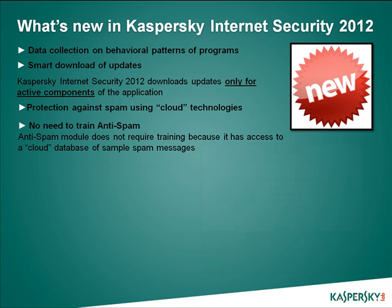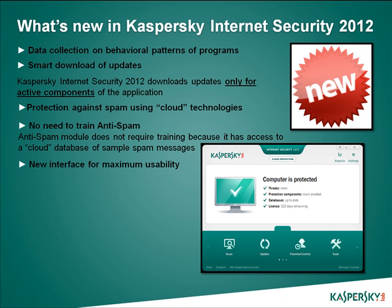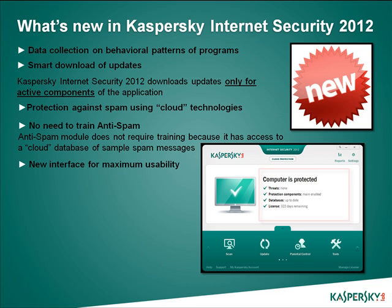New interface for maximum usability. In Kaspersky Internet Security 2012, significant changes have been made to the interface of the main window. The modern animated design facilitates the perception of information and makes it easy to run basic scenarios. The main window now displays all necessary information on your computer's protection status, the active defense components, the up-to-dateness of the antivirus databases, and the license period. In addition, you can view recommendations on configuring various components and other actions, as well as check the activity of cloud technologies.